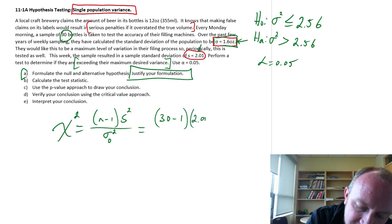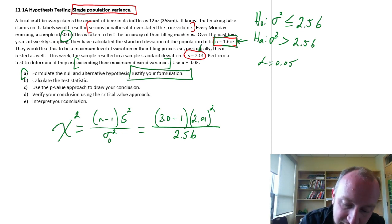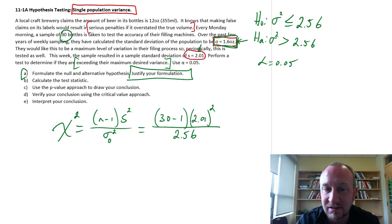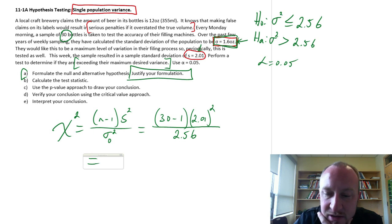So here we have our sample is 30 bottles minus 1, this is our sample variance, so 2.01 squared divided by our hypothesized value is 2.56. Remember that's already squared, I already took that 1.6 and squared it to get our hypothesized variance. Now we just need to punch those numbers into our calculator.